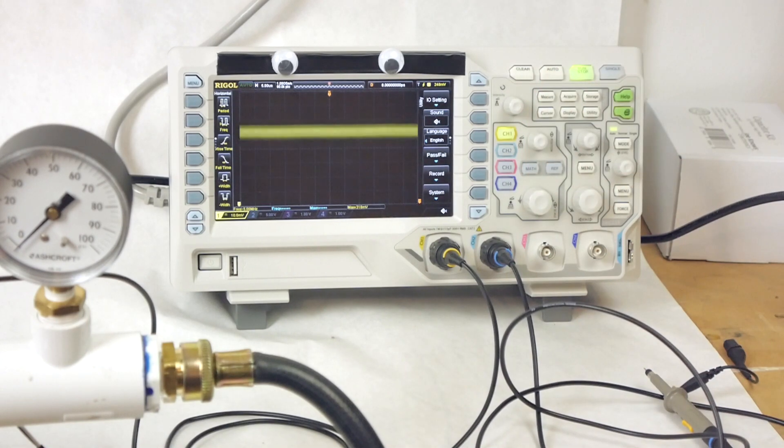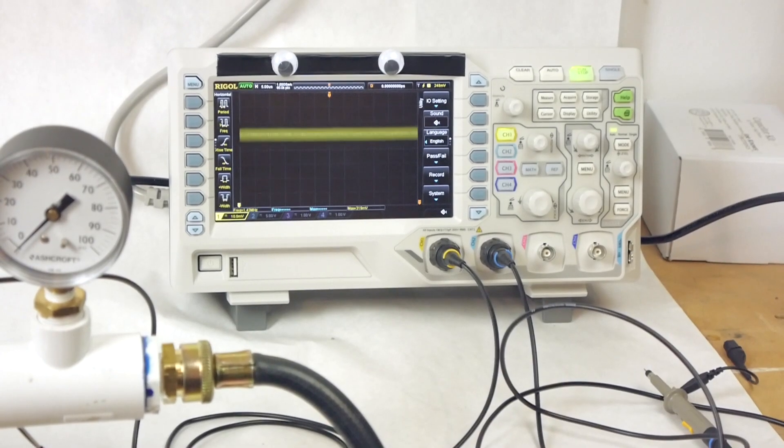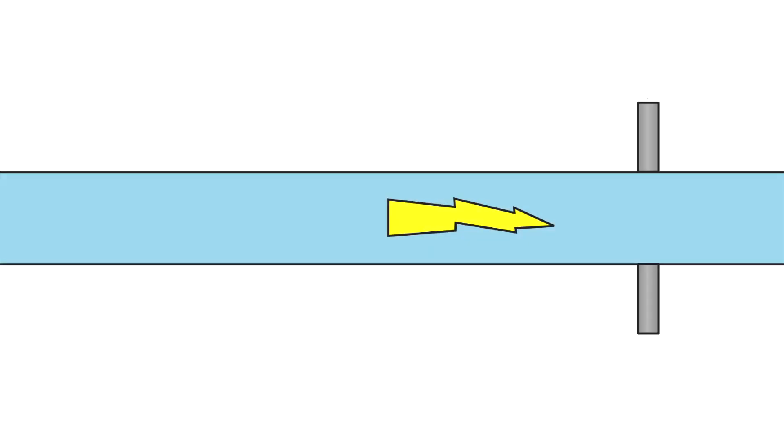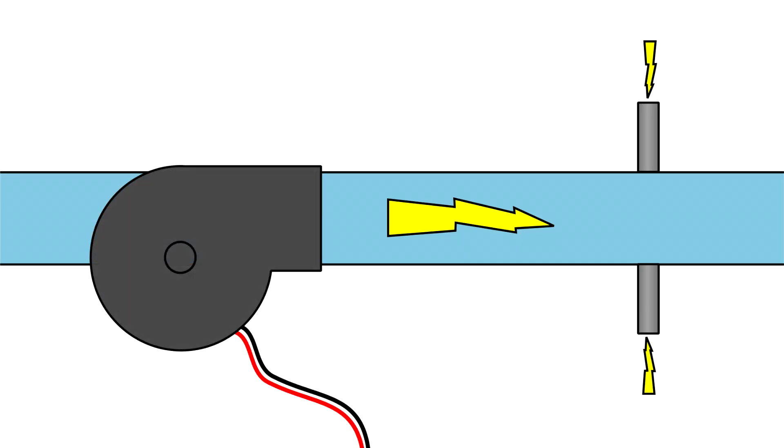The problem is electrical noise, and there are a few potential sources of noise here. First, depending on the fluid chemistry and the type of metal used for the electrodes, an electrolytic reaction between the liquid and the electrode can generate an electric potential. Second, stray voltages can sometimes exist within the fluid from other equipment along the pipe, like the pump.